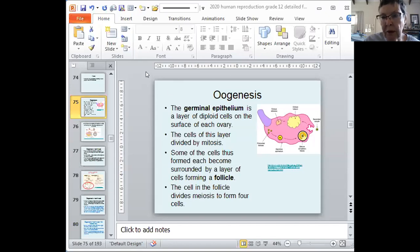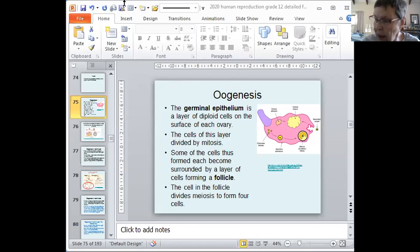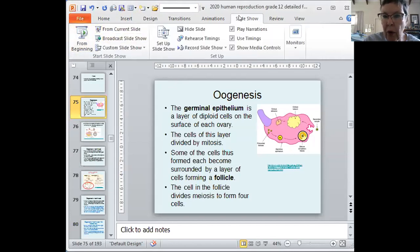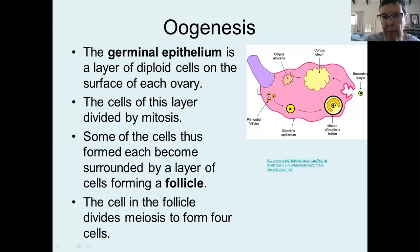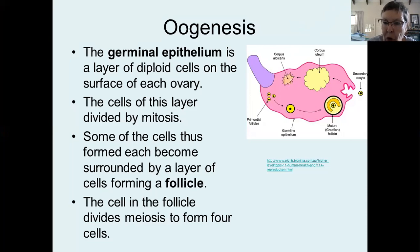Good afternoon, grade 12s. This is lesson 3 of Human Reproduction and it's the lesson for Thursday, the 7th of May. So we finished with the structure of the female reproductive organisms today and I hope that you all understood it and everything was clear to you as I hope the previous lesson would be.